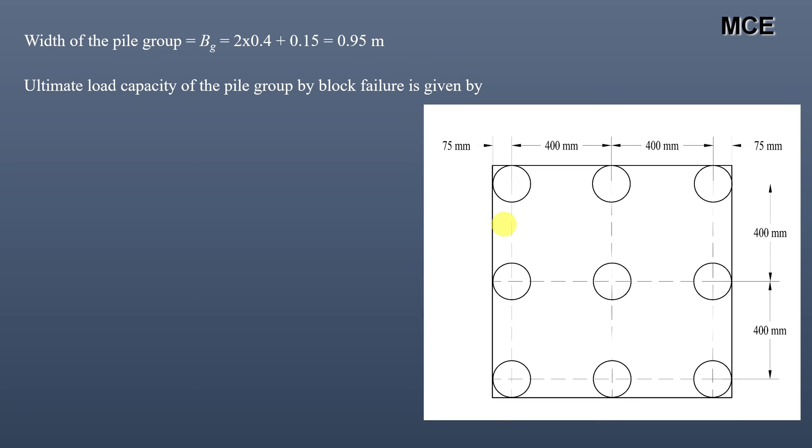Ultimate load capacity of the pile group by block failure is given as Qug = Cub × Nc × Ab + Pb × L × Cu. This Cu is the undrained cohesion, so it is again 50 kPa, and Nc bearing capacity factor is 9.